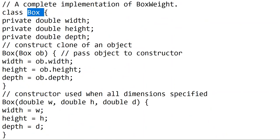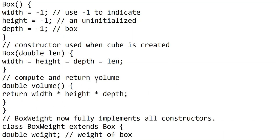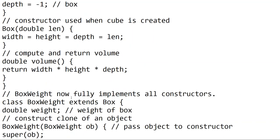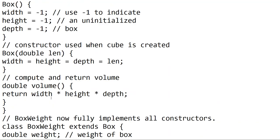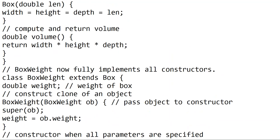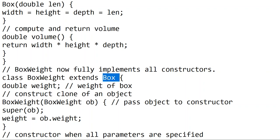This is all about our main class Box — the super class, or parent class Box. We created a new class: BoxWeight, which extends Box. BoxWeight will inherit the properties of the Box class.